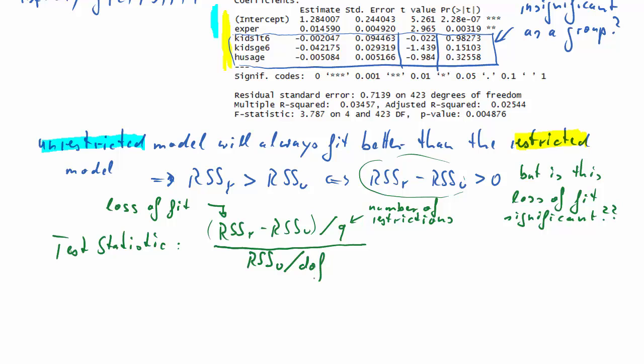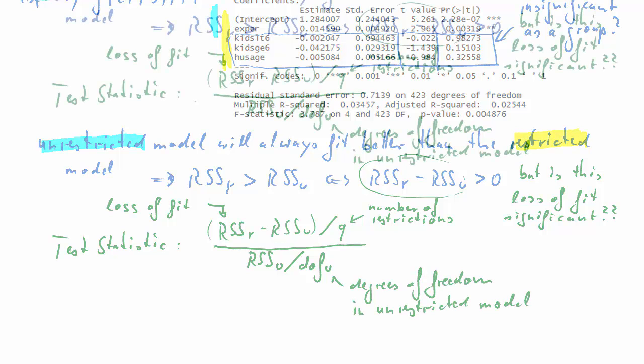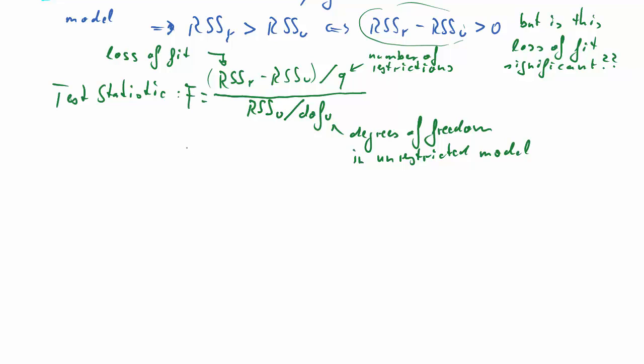In the denominator, we will have the residual sum of squares of the unrestricted model divided by the degrees of freedom for the unrestricted model. So this is what we call the F-test. And we know we need a distribution for this F-test. And it turns out it's F distributed with Q and degrees of freedom U degrees of freedom.